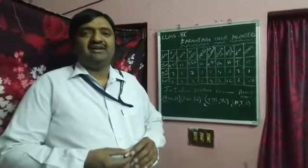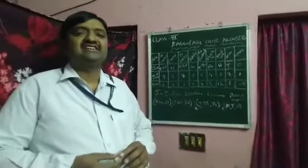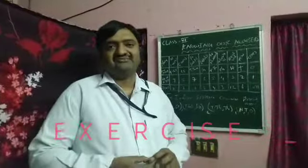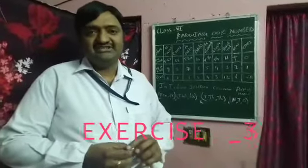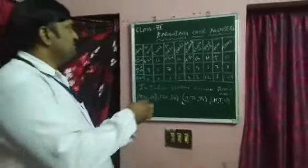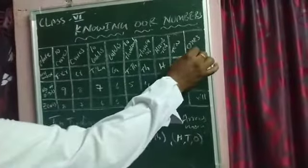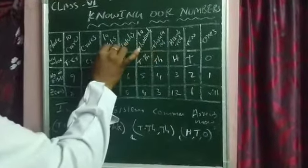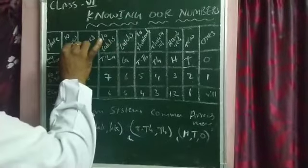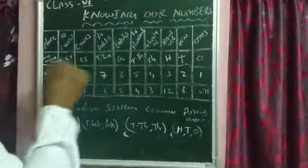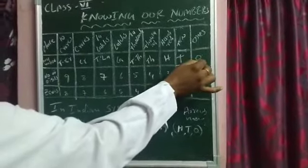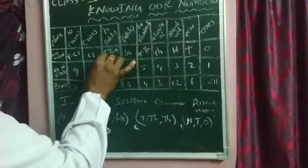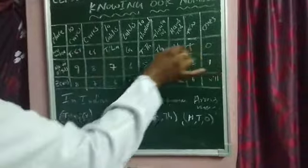Welcome back to the online mathematics class. Last class we completed the second exercise on knowing our numbers. Today we are going to learn exercise 3. First we will learn the Indian system table. Observe on the board: the place values are ones, tens, hundreds, thousands, ten thousands, lakhs, ten lakhs, crores, and ten crores. You will write these in short form.